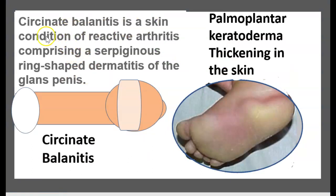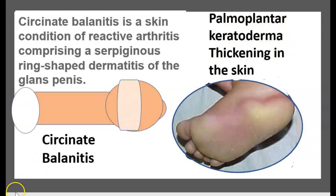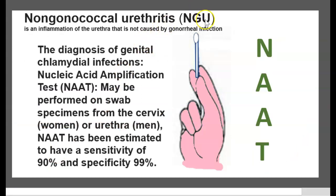Circinate balanitis is a skin condition of reactive arthritis comprising a ring-shaped dermatitis of the glans penis and palmoplantar keratoderma — thickening of the skin. Non-gonococcal urethritis is inflammation of the urethra that is not caused by gonococcal infection.